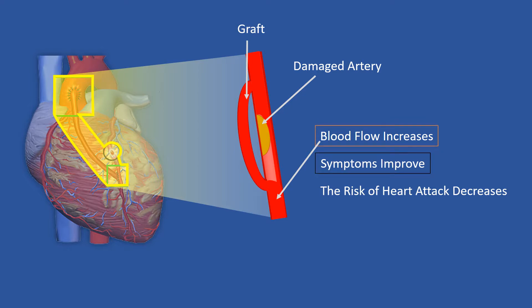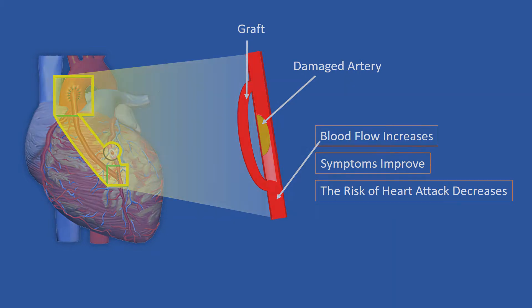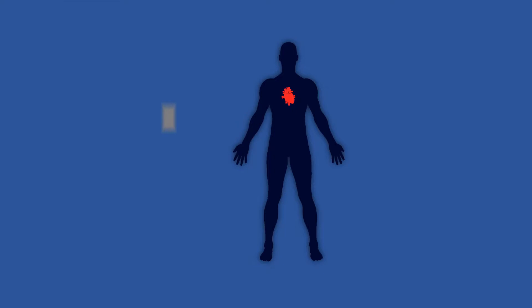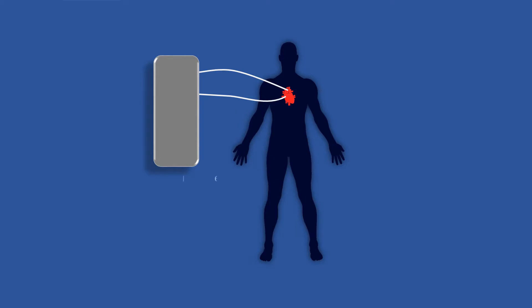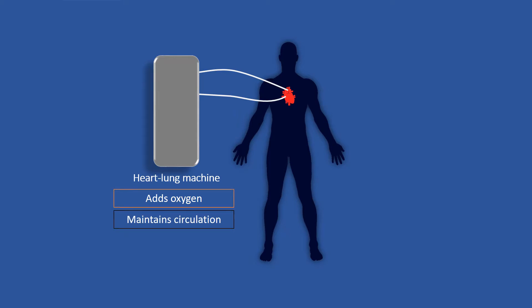Depending on your condition and how many coronary blood vessels are narrowed, you may need one or more grafts. In some cases, during the operation, the heart is stopped temporarily and the blood is rerouted to a heart-lung machine, which adds oxygen to the blood and maintains circulation. After the surgery, normal heartbeat and blood circulation are restored and the breast bone and chest are closed.